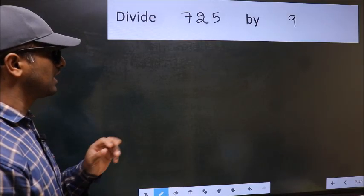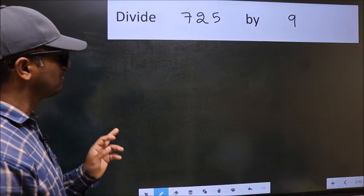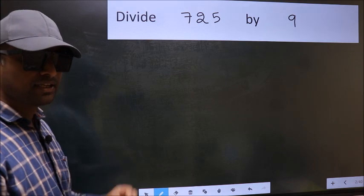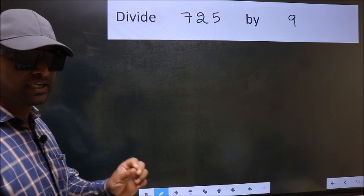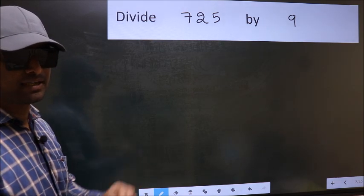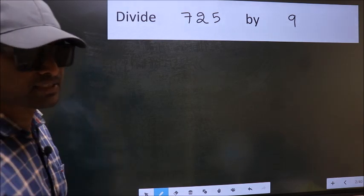Divide 7.25 by 9. While doing this division, many do this mistake. What is the mistake that they do? I will let you know. But before that, we should frame it in this way.